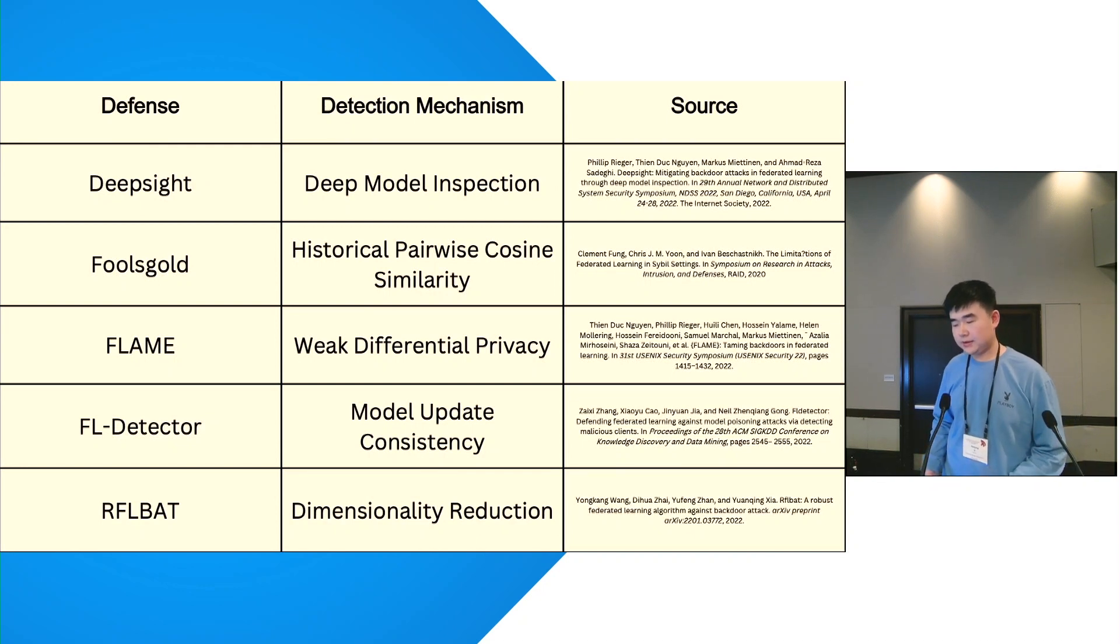FL Detector is a KDD paper last year and it predicts a global model and uses the model to filter out outliers based on model update consistency. And RFL-BAT is based on dimensionality reduction which projects the gradients to low dimensional space and performs clustering.